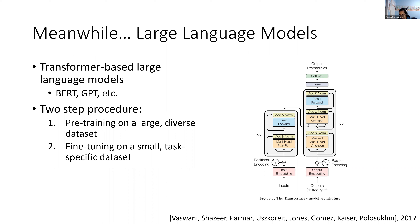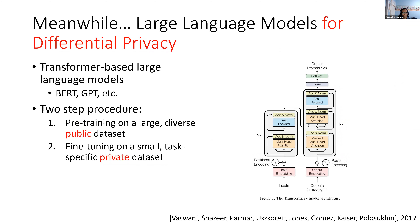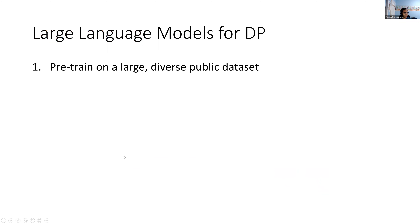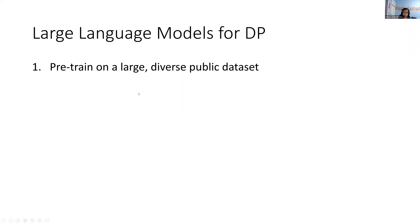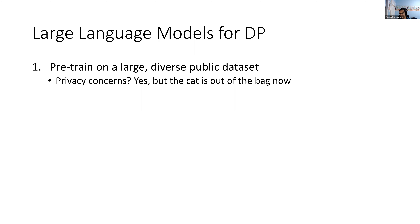I framed it this way because I wanted to comment on how convenient this is for differentially private machine learning. The framework I want you to picture is: the first step — pre-training — is on a large, diverse public dataset, but then we're going to do fine-tuning on a smaller task-specific private dataset. The pre-training step is on public data — things downloaded from the internet, books, etc. — and there may be privacy concerns here, as that work by Carlini et al. that I mentioned at the beginning showed.